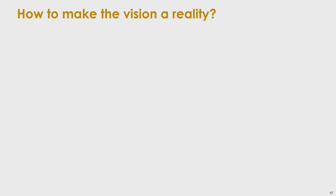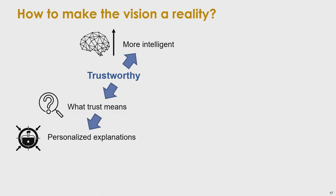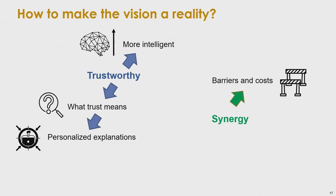How do we make this vision a reality? We need to work on trustworthy and synergistic AI. For trustworthy AI, we need to make tools more intelligent so people can trust them and work with them. We need to understand better what trust means — how exactly can a human trust a bot for a particular task, and how can we make explanations more personalized? In the area of synergy, we need to identify barriers to collaboration, manage the change process, and mitigate issues like false positives.